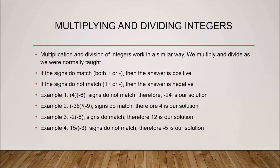Multiplying and dividing integers work in a similar way to regular multiplication and division. We just need to remember two properties: if the signs match — both positive or both negative — the final answer is positive. If the signs are different — one positive and one negative — the answer is negative. Example one: four multiplied by negative six — the signs are different, so the final answer is negative twenty-four.